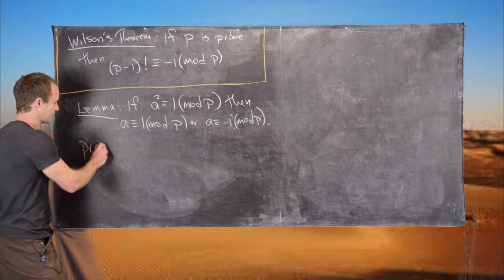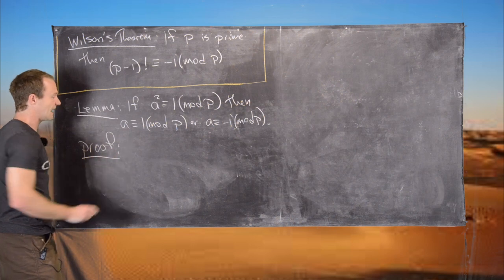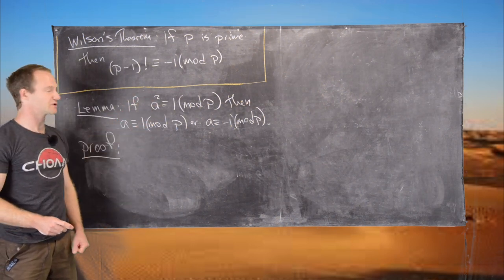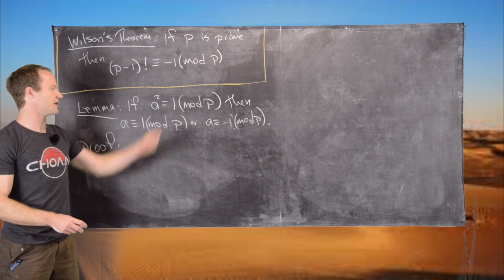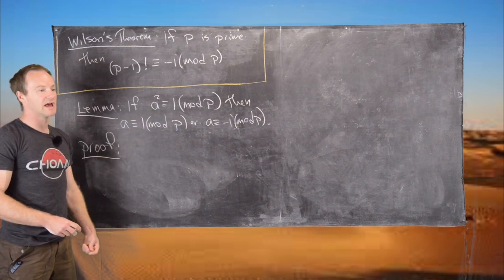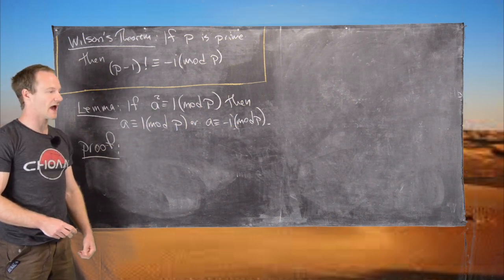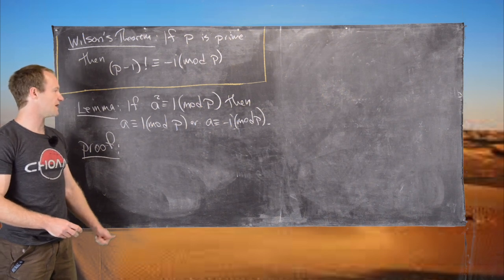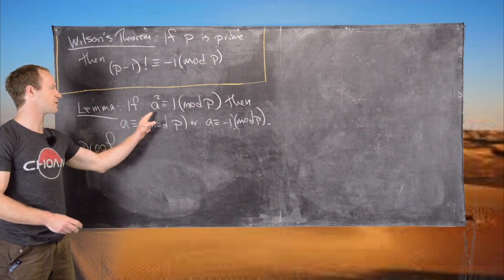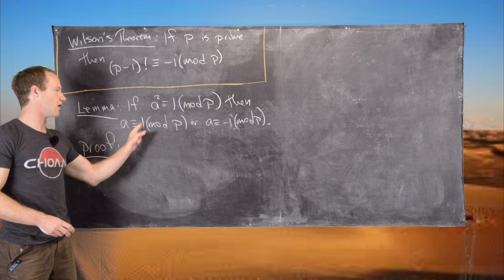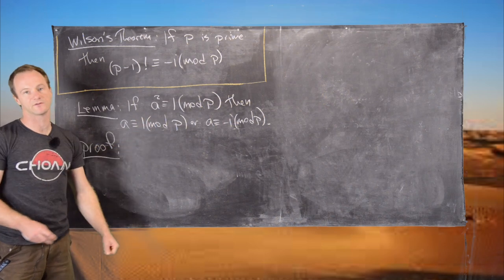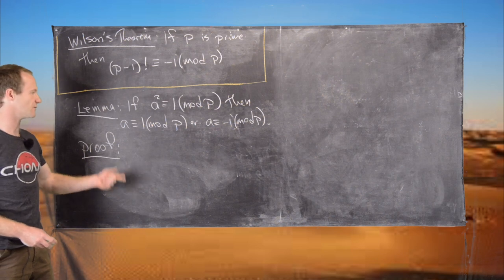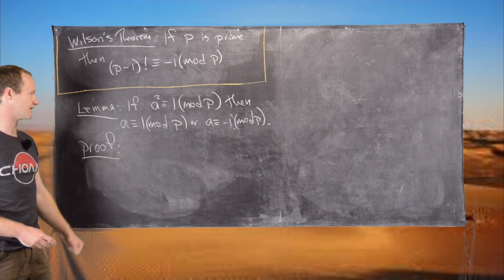Let's look at the proof. What this means in particular is that if you look at all the numbers mod p, every number has a unique inverse modulo p, and it turns out the only numbers that are their own inverse are 1 and negative 1. That's actually how we're going to apply this in the proof of Wilson's Theorem.